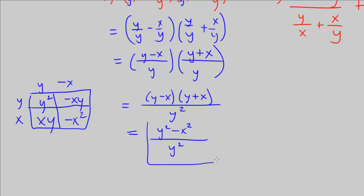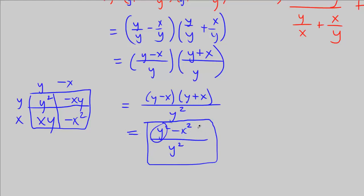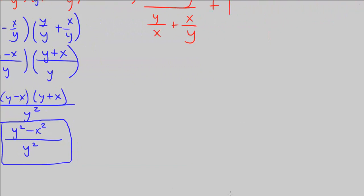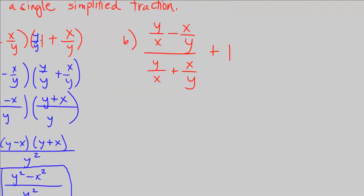And in the denominator we have y squared. Let's box our answer because now it is a single simplified fraction. You might think, oh wait — can't we reduce this and factor it? Because it's the difference of two squares. We could, but that would not simplify it; that would factor it.